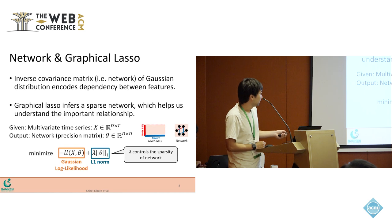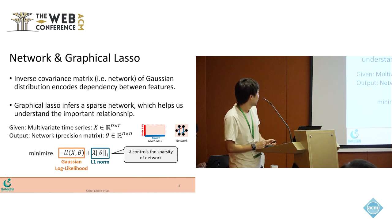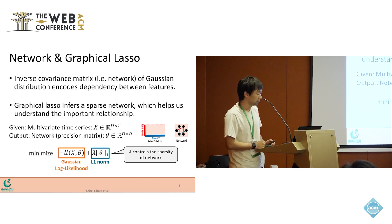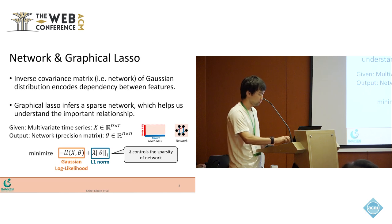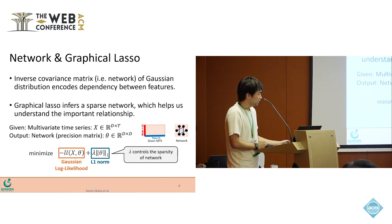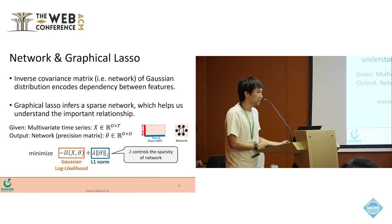then they are dependent given the rest of the variables — meaning it encodes the dependency between features. In this study, we use graphical lasso to infer a sparse network. The sparsity of the networks helps us understand the important relationships.